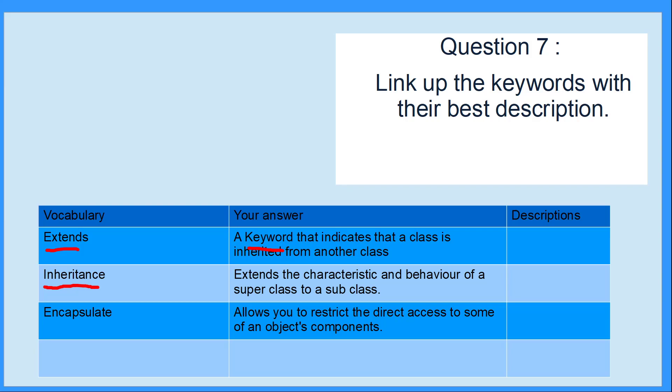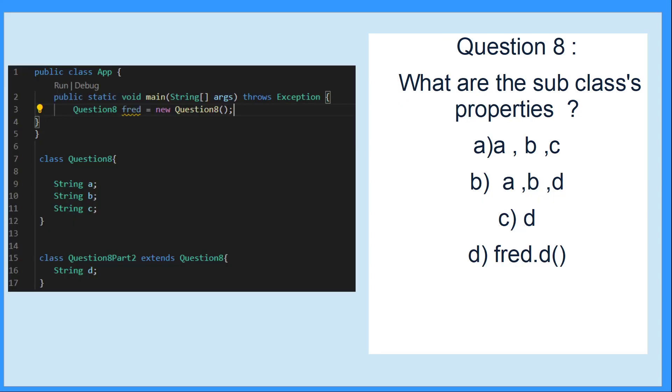This question is talking about basic OOP properties and attributes. What are the subclass's properties? If we look here, we've got the super class or parent class, and here is our child class. The answer is d because these are the parent properties and these are the child properties. However, because we've extended it, both of these properties can be accessed by the child class.